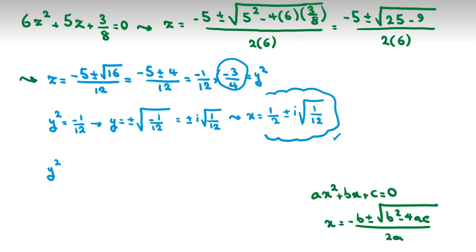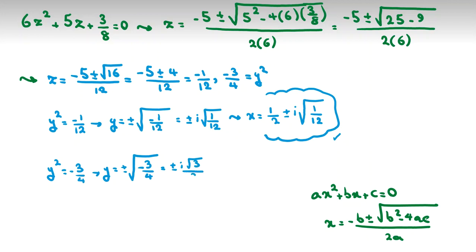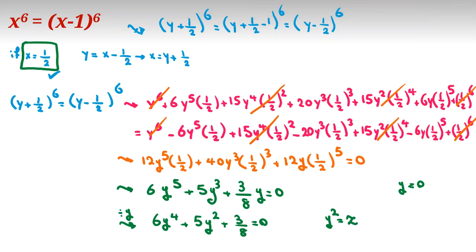For the second case, y squared equals negative 3/4, so y equals plus or minus i times square root of 3/4, which is plus or minus i·(√3)/2. Then x equals one half plus or minus i·(√3)/2, or equivalently (1 plus or minus i√3) over 2. This gives two more complex answers. Combined with y equals 0, we have found all five answers for this equation.